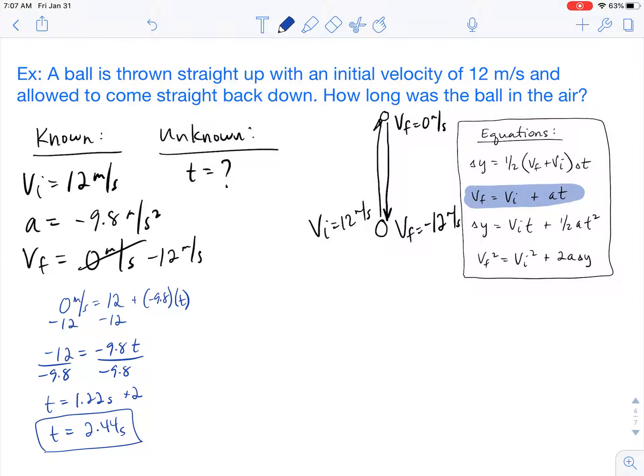And we could redo this problem with VF being negative 12. And we will see that we get the same exact answer using the same exact equation. So in this case, negative 12 is going to equal 12 plus negative 9.8 times T. Once again, we'll have to subtract 12 on both sides. So we'll get negative 24 equals 9.8 times the time. Once we divide by negative 9.8 here, since this takes into account the entire trip up and down, we don't have to double it this time. And we get an answer of 2.44 seconds.